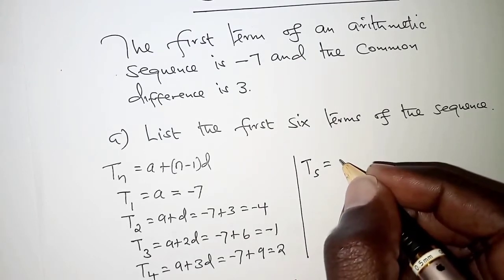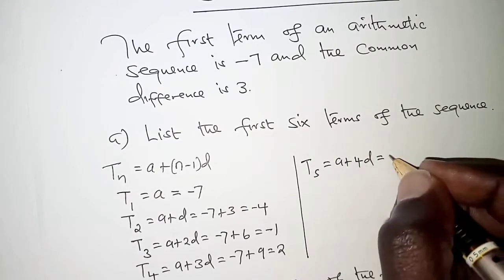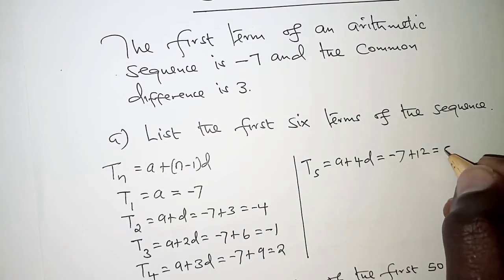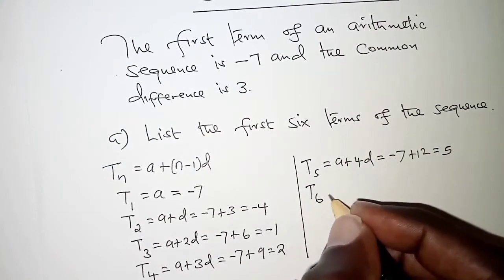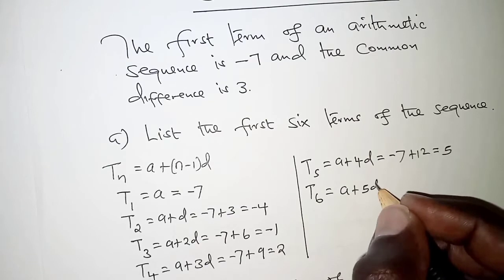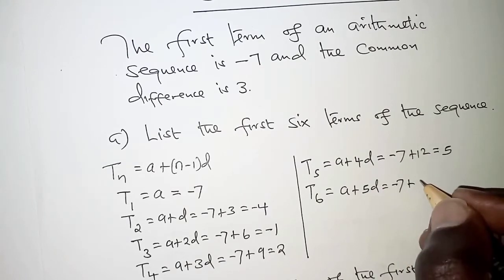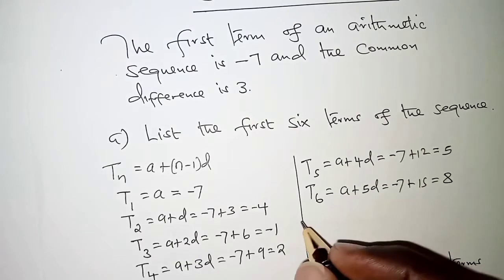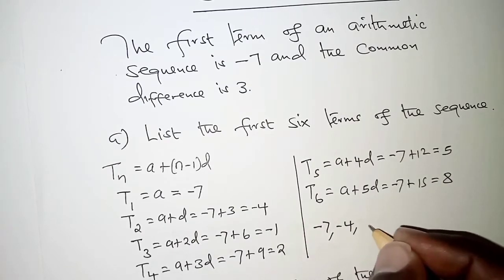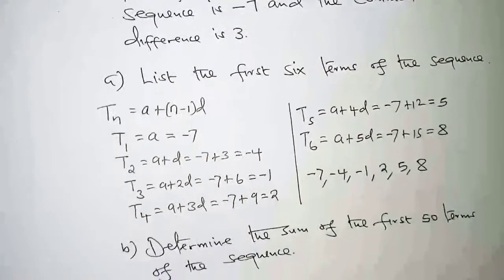For the fifth term, we have a plus 5 minus 1, that is 4d, giving negative 7 plus 4 times 3, which is 5. And the sixth term is a plus 5d, that is negative 7 plus 5 times 3, which is 15, giving us 8. So listing all the terms: negative 7, negative 4, negative 1, 2, 5, and finally 8.